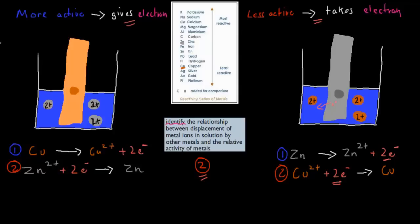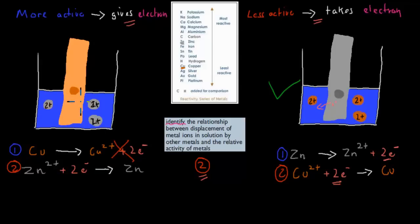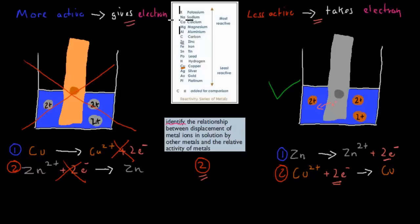This will work because zinc gives and copper takes. Whereas if we have it the other way around — if copper is the metal — copper is less active, so copper is meant to give electrons. But because it's less active, it only wants to take, so it's not going to give. And if it doesn't give, zinc ions can't take those electrons. So we need to make sure we have the more active metal as our metal, and the less active metal as our ions.